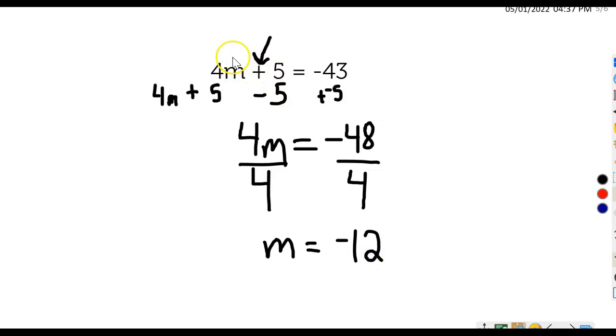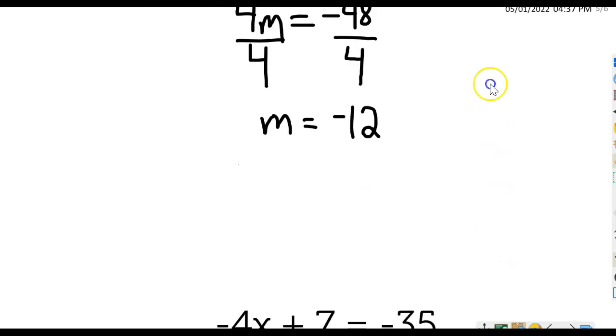And we can check our answers. 4 times negative 12 is negative 48, plus 5 is negative 43. That's correct. Let's go ahead and just take a look at another problem.